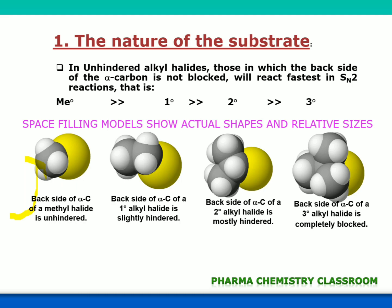The alpha carbon atom of methyl halide is unhindered, so substitution happens very easily — the nucleophile can attach easily on the alpha carbon. Remember, the alpha carbon is the carbon containing the leaving group, which here is any halide. For primary alkyl halide it is slightly hindered but the nucleophile can still attack. For secondary alkyl halide it is mostly hindered and difficult. For tertiary alkyl halide the alpha carbon is completely blocked, so tertiary alkyl halides will not undergo SN2 reaction.